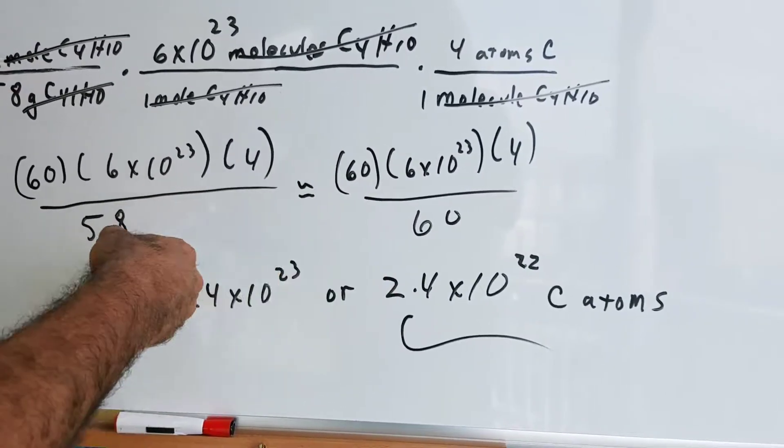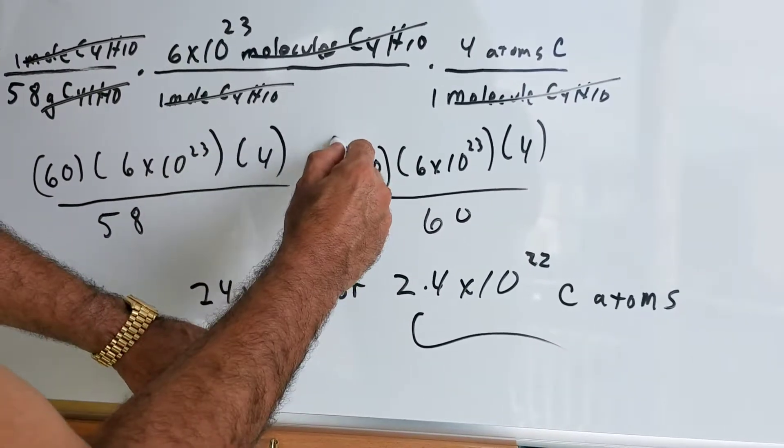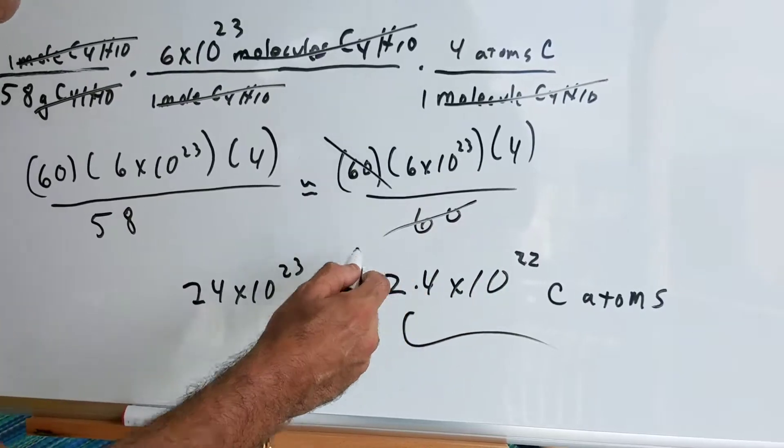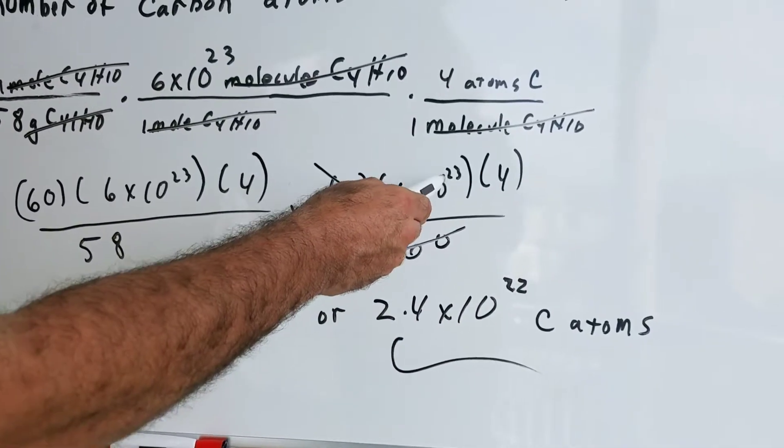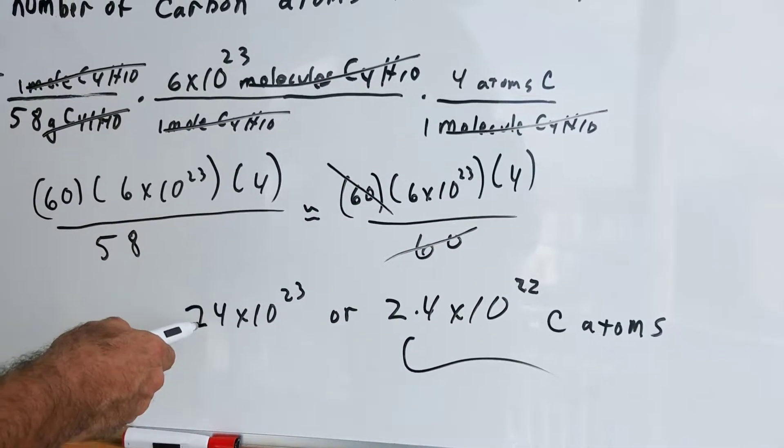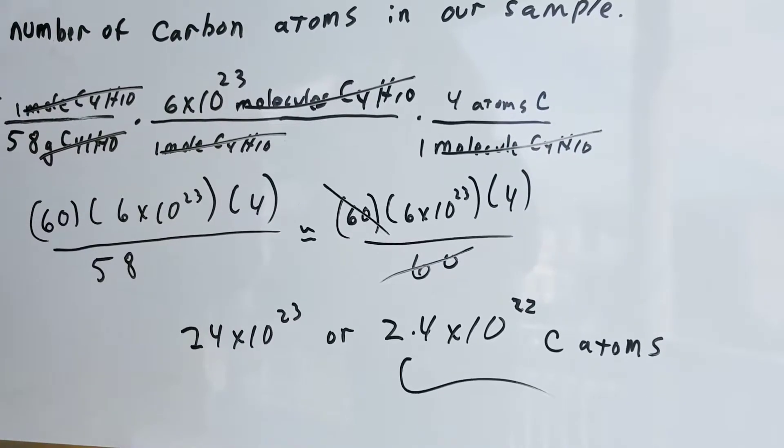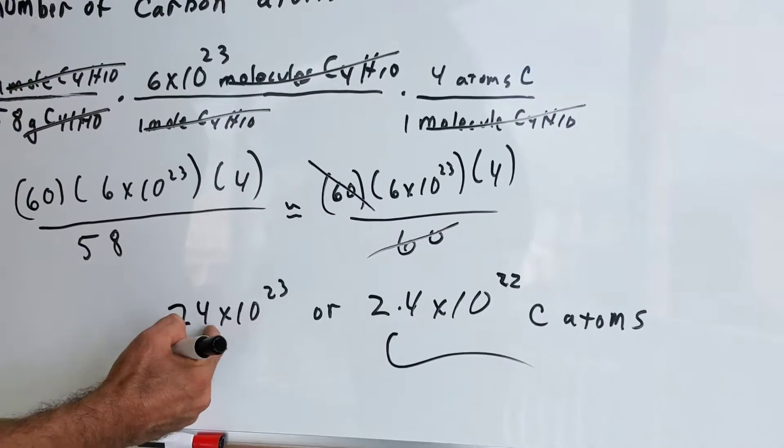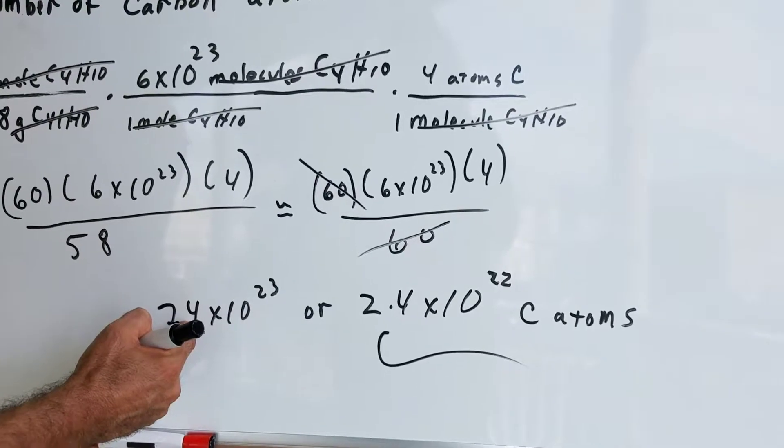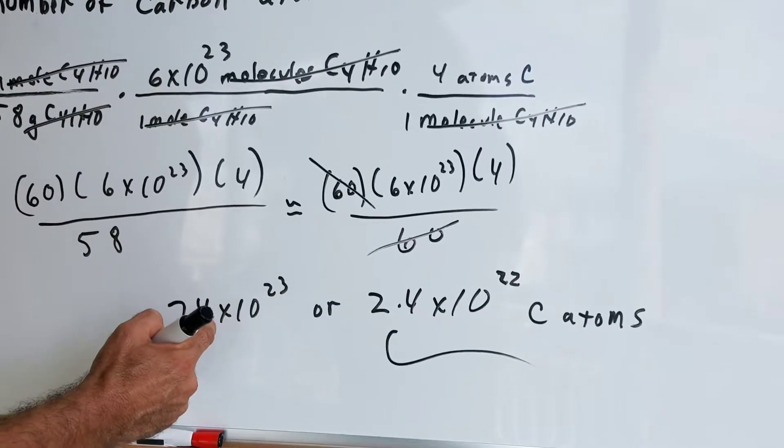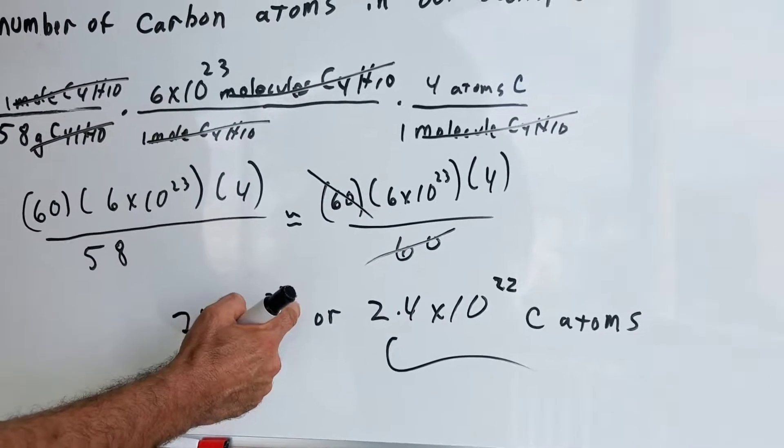58 is approximately 60. So as you can see, I rewrote this. I keep the numerator. The denominator, 58 is 60. And watch what I do. I cross out the 60s, and I'm left with 6 to the 23rd times 4, which is 24 to the 23rd. Or, if I have to rewrite this, I move the decimal back 1. If I move the decimal back 1, I move this up 1.